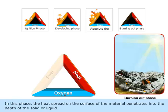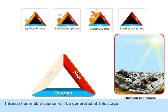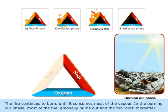Absolute Fire Phase. In this phase, the heat spread on the surface of the material penetrates into the depth of the solid or liquid. Intense flammable vapor will be generated at this stage. Burning Out Phase. The fire continues to burn until it consumes most of the vapor. In the Burning Out Phase, most of the fuel gradually burns out and the fire dies thereafter.